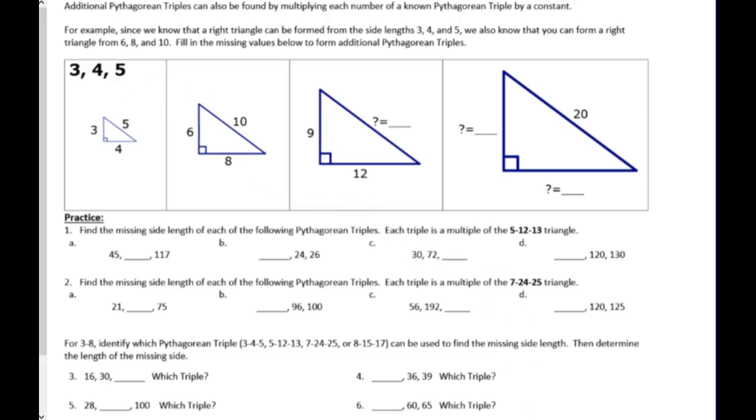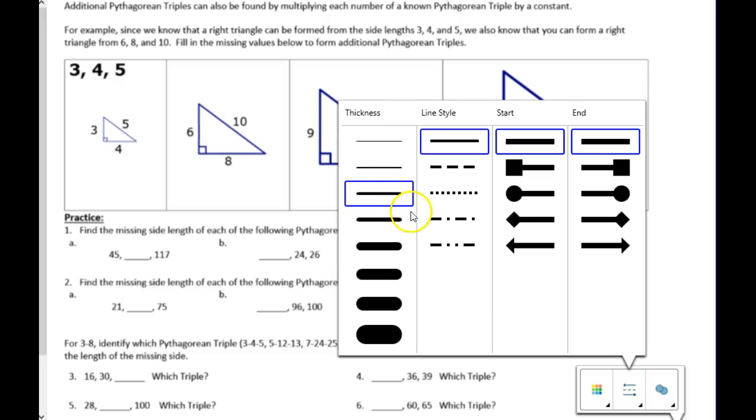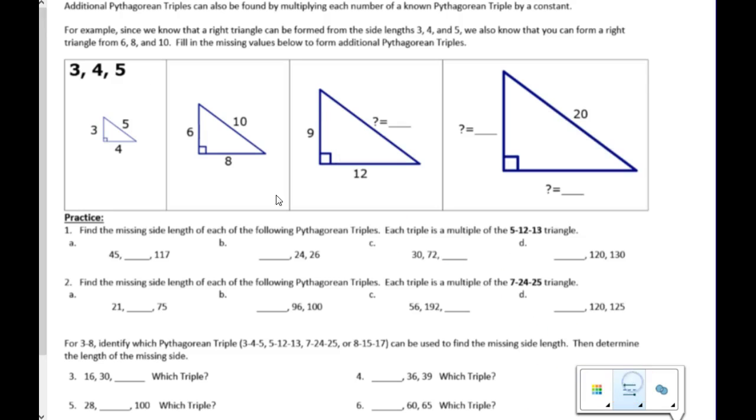All we did was take the Pythagorean triple of 3, 4, 5, and we did it times 2. So, this is, put a little times 2 right here.